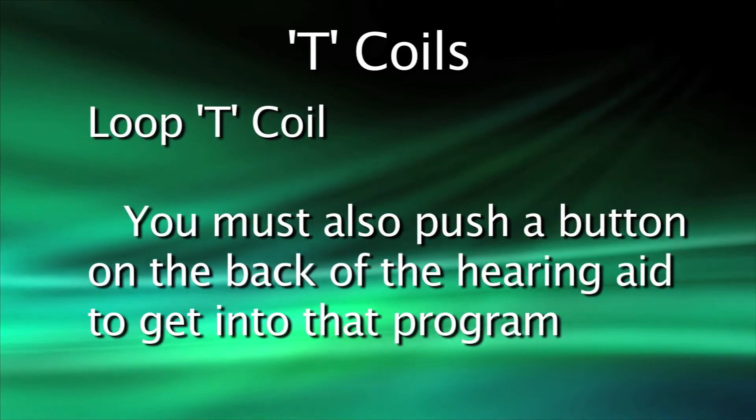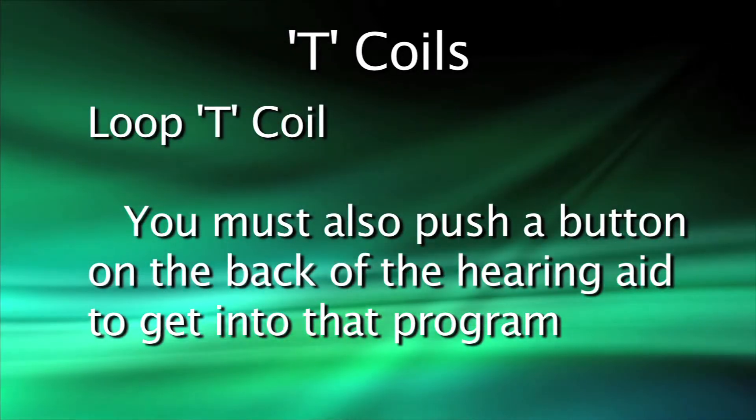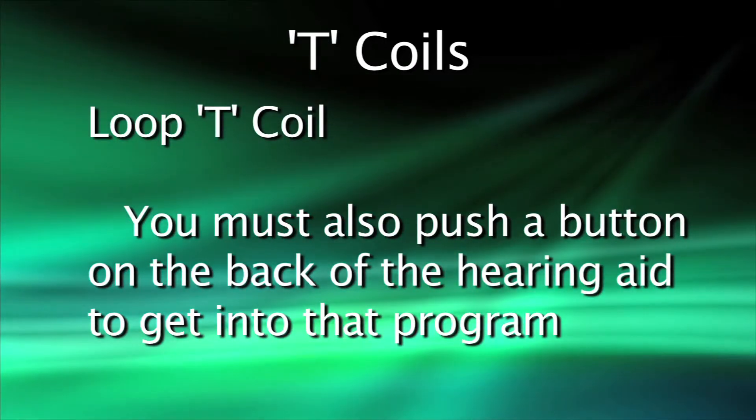The third is a loop T, or a public T-coil. With that one, you also have to push a button to get into the program. What becomes confusing is when you have an auto T in your hearing aid — your audiologist or hearing aid dispenser told you that you do have a T-coil, but yet you come to a meeting like this and you can't use it. Tony tells you to turn it on and it doesn't turn on.